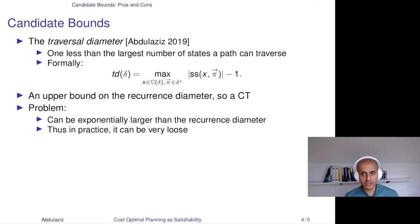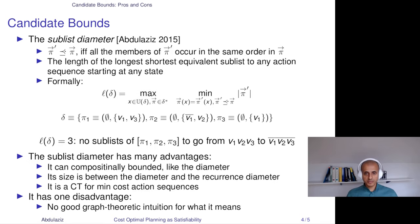Another possible topological property is the traversal diameter, and I introduced it in 2019 in the context of compositional approximating the diameter. It has the main advantage that it can be easily computed. It is defined as one less than the largest number of states any path can traverse in the state space. It is an upper bound on recurrence diameter and can actually be exponentially bigger than the recurrence diameter, and that's why it is also a CT for minimum cost action sequences. But the problem with it is that it can be very loose in practice. It would be better if we can find something that is tighter.